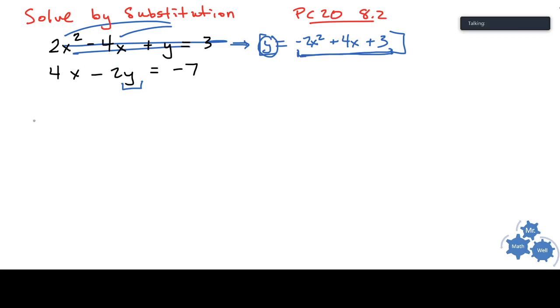Okay, so we rewrite that like this, so it's going to be four times x minus two times not y, but all this up here. So negative two x squared, plus four x plus three, and then equals negative seven. So now I've this is how I've taken two original equations and forced them into one equation. With one variable, that's the important thing, I only have one variable here now.